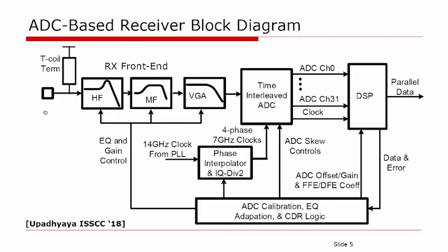At the receiver, the input is terminated using a T-coil enhanced termination scheme. It is then fed into a series of continuous-time linear equalizers, CTLE, that perform high-frequency and mid-frequency boosting. A VGA, or variable gain amplifier, ensures that the amplitude of the signal at the ADC input is within the ADC dynamic range. The ADC takes the analog signal and converts it into parallel digital symbols.